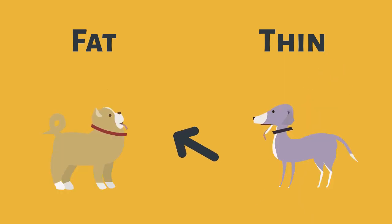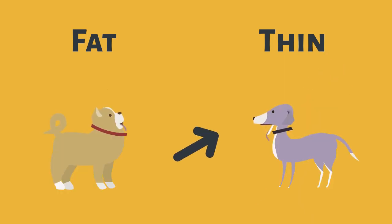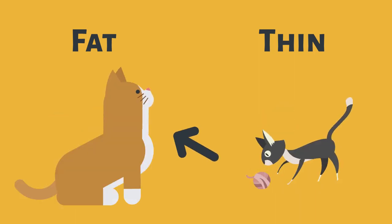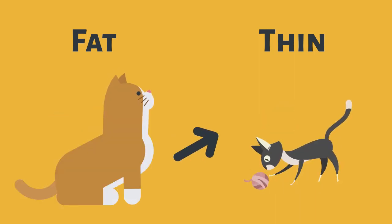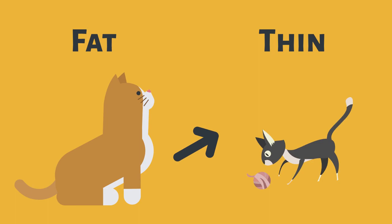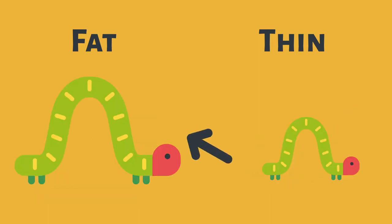This dog is fat. This dog is thin. This cat is fat. This cat is thin. This caterpillar is fat. And this caterpillar is thin.